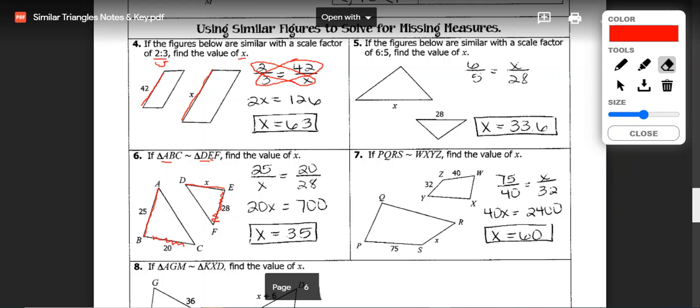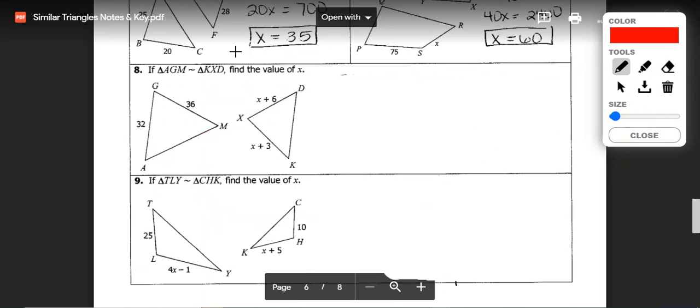Let's go ahead and take a look at problem number 8. Problems number 8 and 9 are similar to the problems above, maybe just slightly more complicated due to the fact that we have X plus 6 and X plus 3. Since both of these have a variable on the same triangle, we're going to end up with variables on both sides. Let's see how we would set this up.